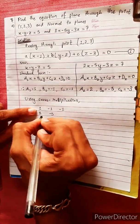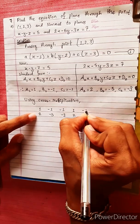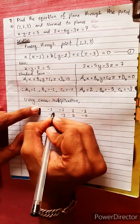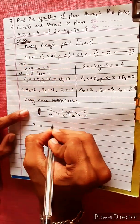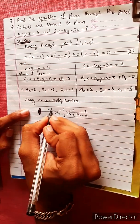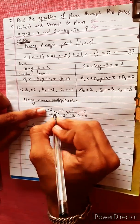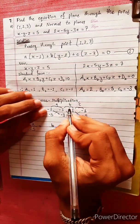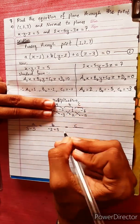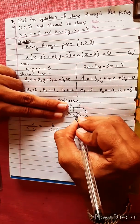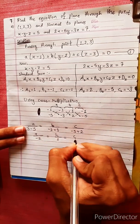We compute the cross product of the normal vectors to find the direction ratios a, b, c. Working through the determinant: positive, negative, positive terms give us A/(-2) = B/1 = C/(-3).